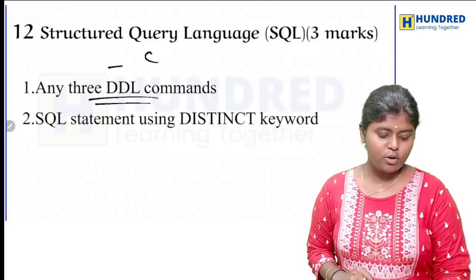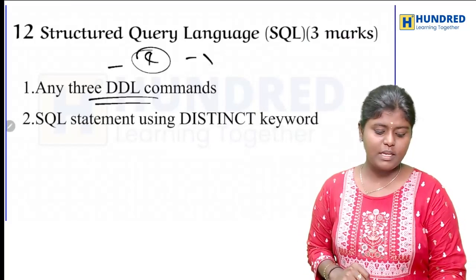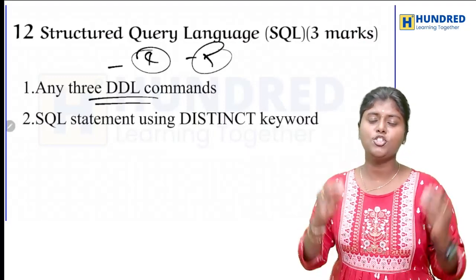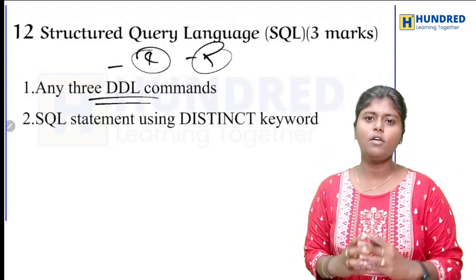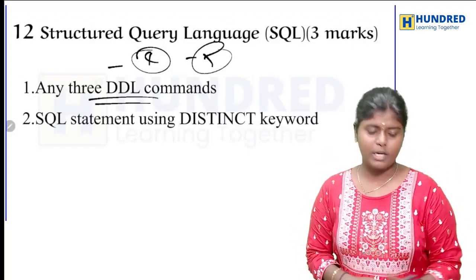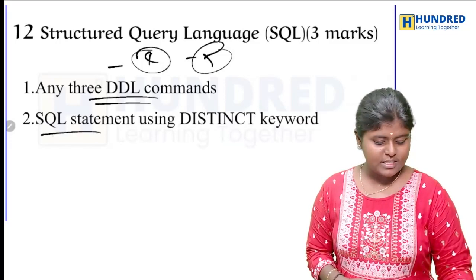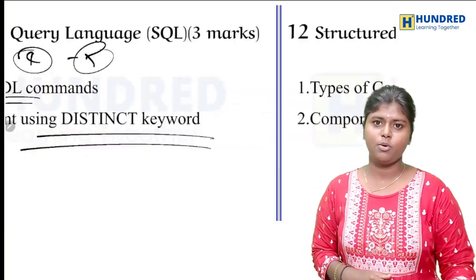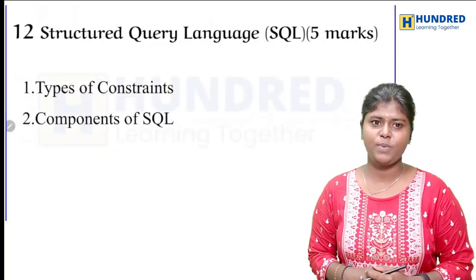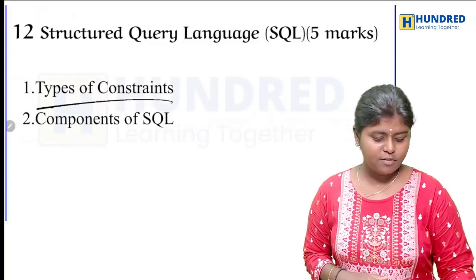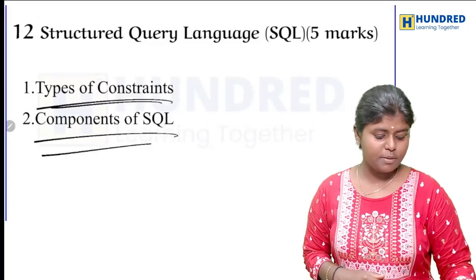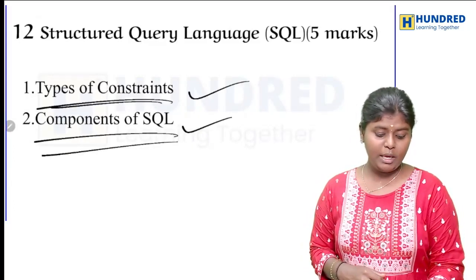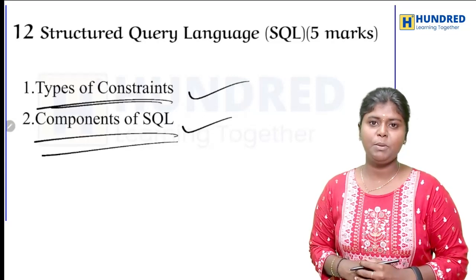Moreover, there are 4 to 5 DDL commands you can do, but any 3 are confident — learn them by heart. SQL statements we can use. Five marks: types of constraints, and components of SQL — two important two-marks topics.